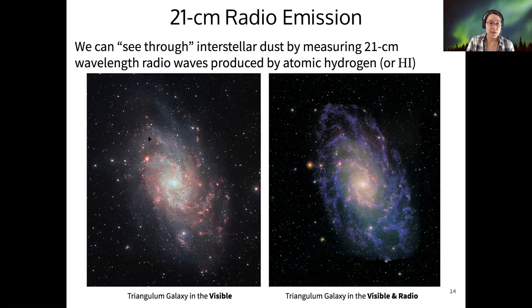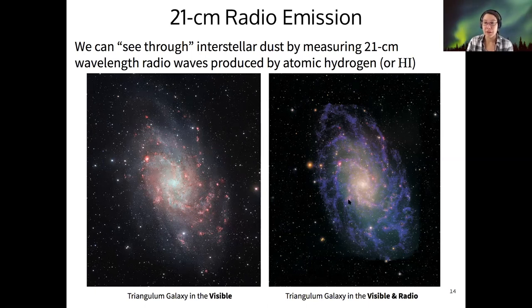So as an example, here's the Triangulum Galaxy in the visible range. You can see all these red splotches. Those are the H2 regions glowing in red. And when we add the 21-centimeter map to this visible image...